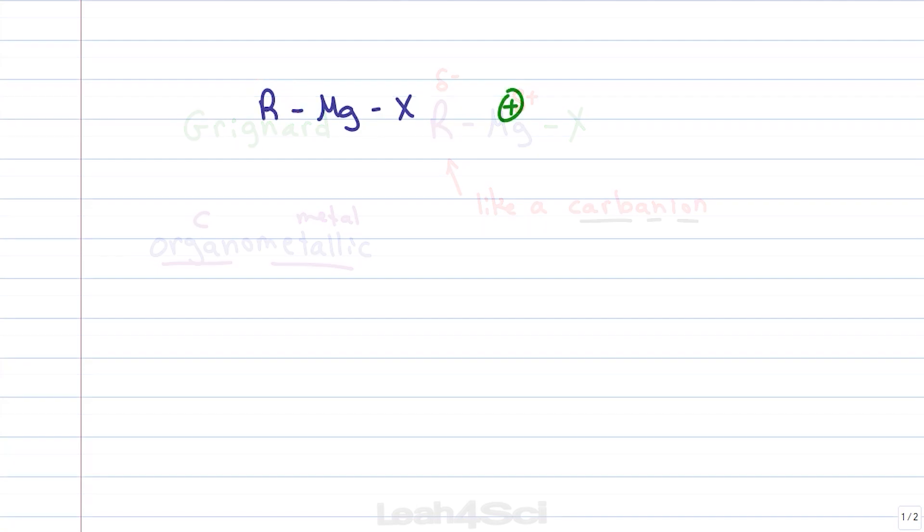When you think of the Grignard mechanism, I want you to imagine that the electrons that sit as a covalent bond between carbon and magnesium are just sitting on the carbon like a negative charge ready to attack and so you show your arrow going from the electrons to that positive thing. This is going to create a new bond between the carbon group on the Grignard and whatever we just attacked.